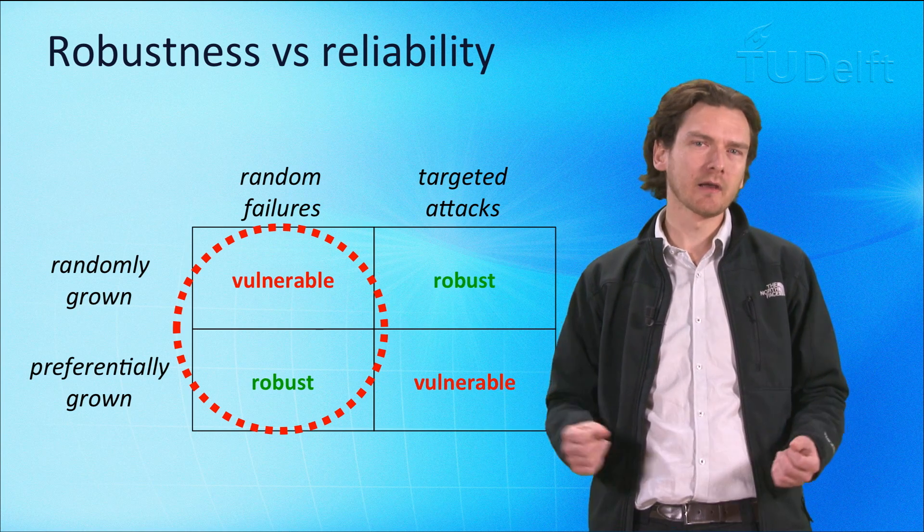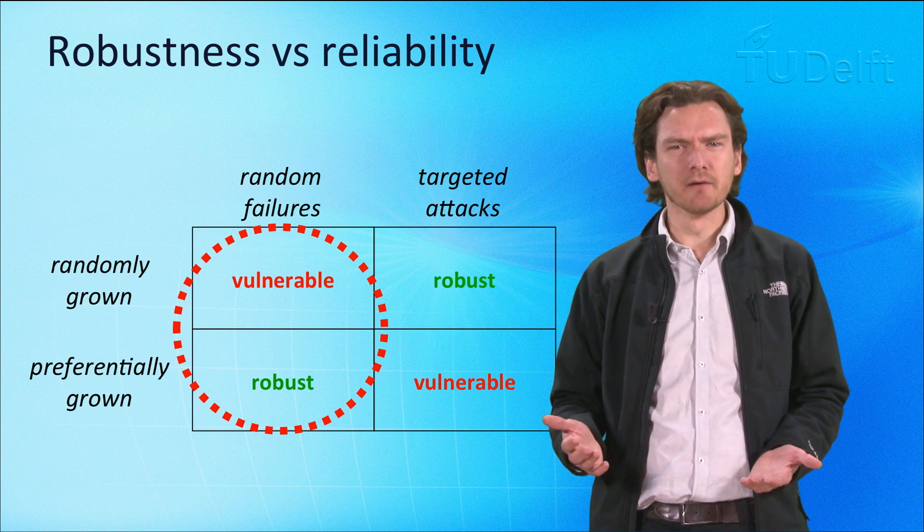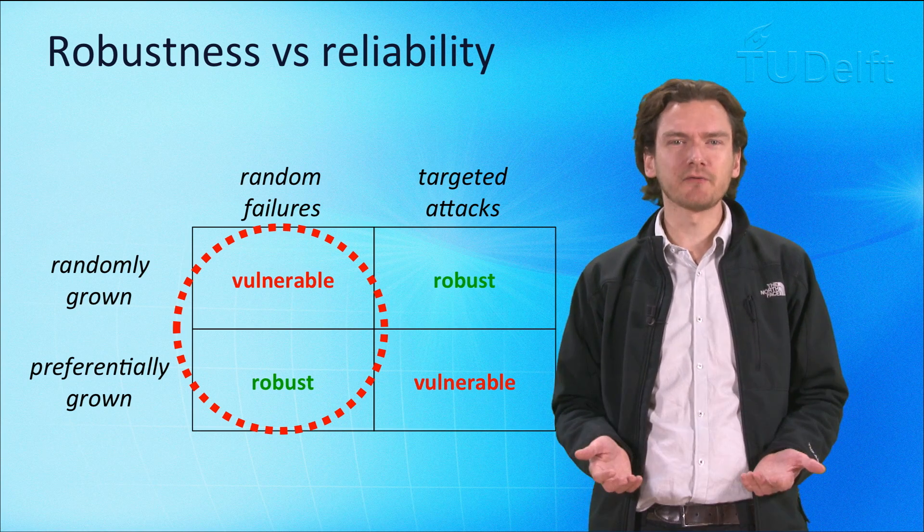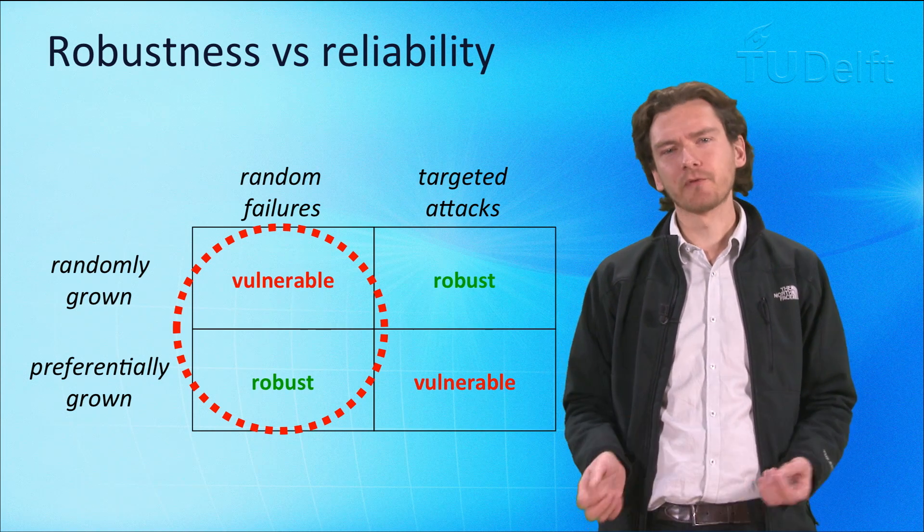However, with a randomly grown graph, a targeted attack would be not as effective, since most of the nodes have more or less the same number of connections. In other words, no one node really acts as a central hub for the network, and as such is more robust.